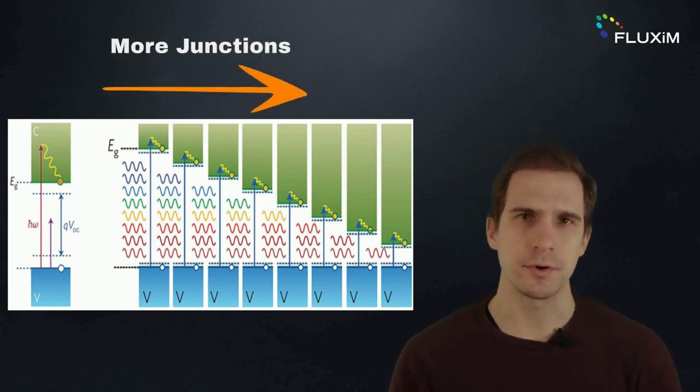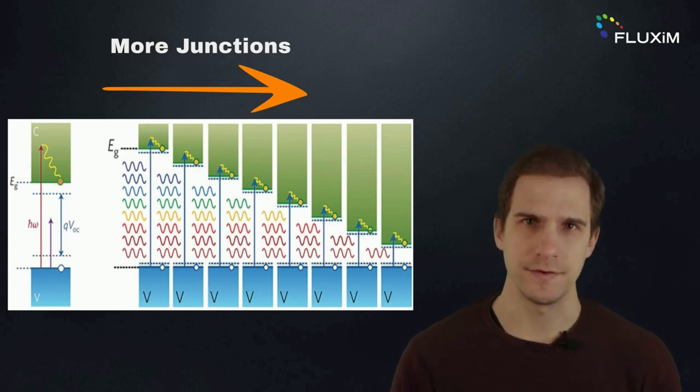The more junctions, the greater the portion of the solar spectrum that is absorbed, resulting in higher theoretical efficiency.